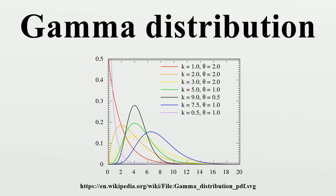For instance, in life testing, the waiting time until death is a random variable that is frequently modeled with a gamma distribution. The parametrization with α and β is more common in Bayesian statistics, where the gamma distribution is used as a conjugate prior distribution for various types of inverse scale parameters, such as the λ of an exponential distribution or a Poisson distribution, or for that matter, the β of the gamma distribution itself.